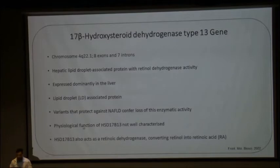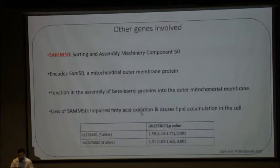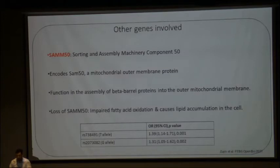Another gene implicated is 17-beta-hydroxysteroid dehydrogenase type 13 (HSD17B13), localized to chromosome 4. The exact function of the gene has not been fully characterized. It is a hepatic lipid droplet-associated protein with retinol dehydrogenase activity, converting retinol to retinoic acid. The variant that protects against NAFLD confers a loss of enzymatic activity. SAM50 (sorting and assembly machinery component 50) is a mitochondrial outer membrane protein helping the assembly of beta-barrel proteins on the outer membrane of mitochondria, and loss of SAM50 is associated with impaired fatty acid oxidation and accumulation of lipids in the cell.